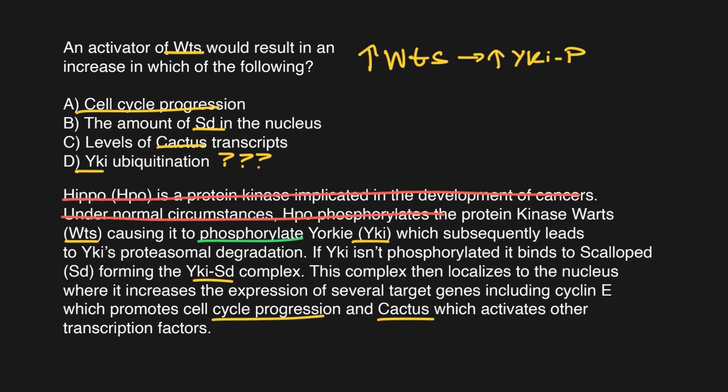Well, what does this lead to or what does this cause? It says this subsequently leads to YK's proteasomal degradation. So we'll draw an arrow with another up arrow to YKI degrade. From here, we probably have our correct answer if we're able to connect ubiquination with proteasomal degradation. Ubiquination is simply just a tag that says, hey, go to the proteasome, go get degraded. So it would make sense that if we activate WTS, that leads to an increase in the amount of proteasomal degradation that we should also see more YKI that's ubiquinated. But let's say that you were a little bit confused about ubiquination and you didn't know how to connect those two pieces together. That's actually okay.